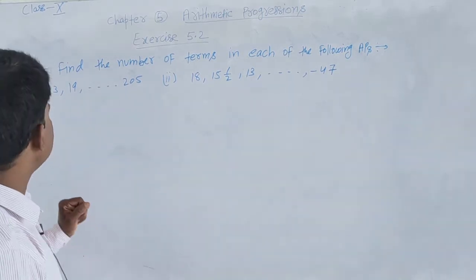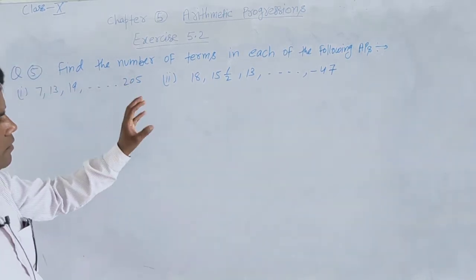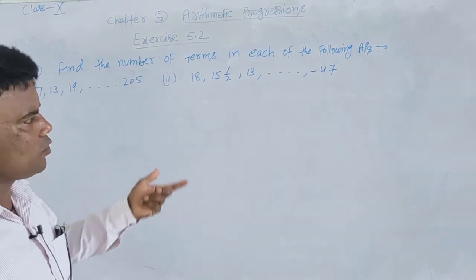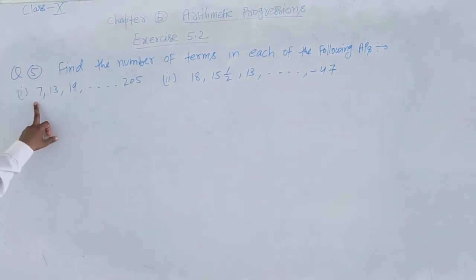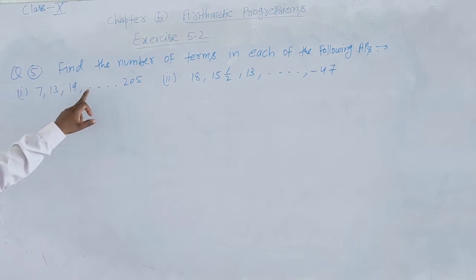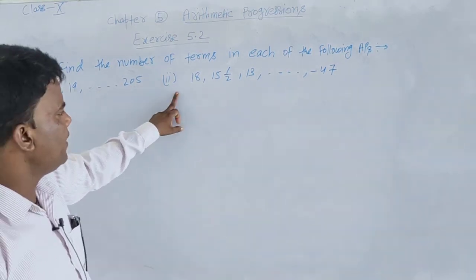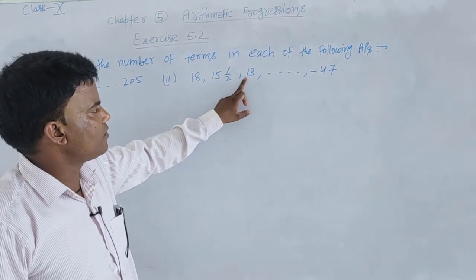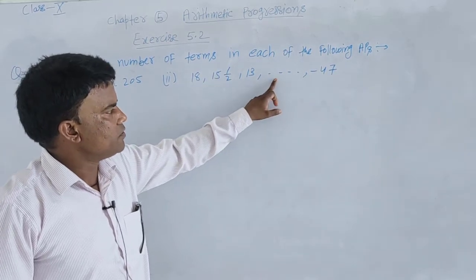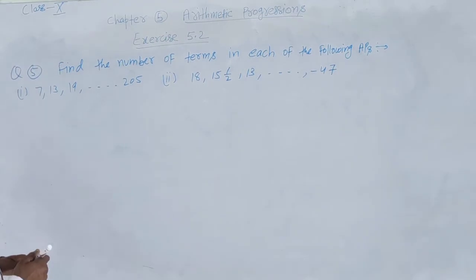Next we discuss Question number 5: Find the number of terms in each of the following APs. First part: 7, 13, 19 and so on up to 205. Second part: 18, 15½, 13 and so on up to −47. Let us solve one by one.